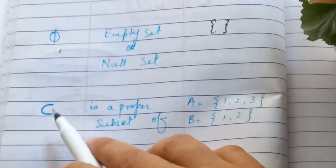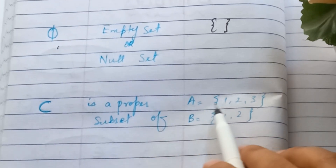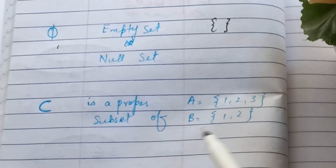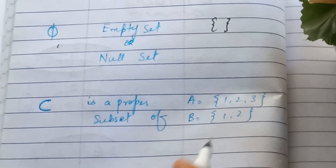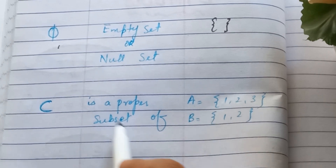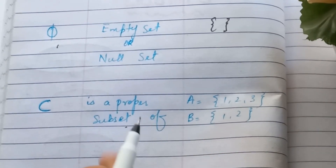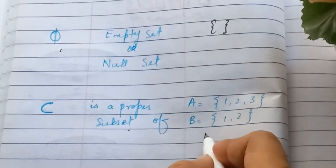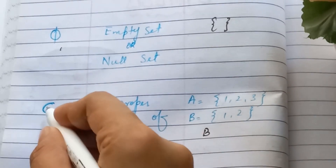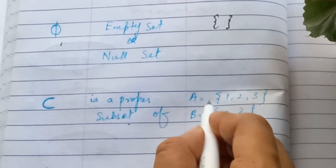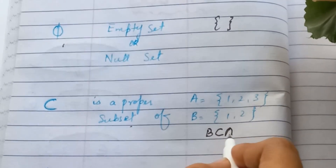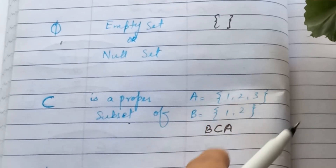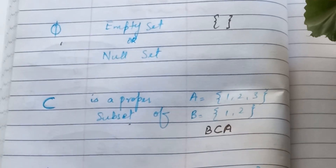The next symbol is 'is a proper subset of' (⊂). Here, A = {1, 2, 3} and B = {1, 2}. We say B is a proper subset of A, not the other way around, because B's elements {1, 2} are all contained within A's elements {1, 2, 3}.